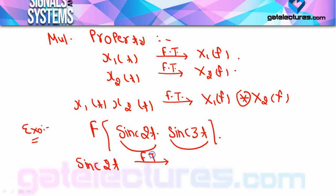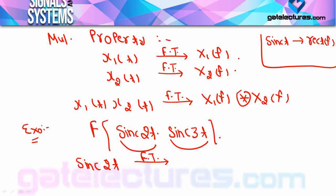sinc(2t) का Fourier transform हमें पता होना चाहिए — हमने last की video में calculate किया हुआ है। sinc(t) का Fourier transform होता है rect(f), तो sinc(2t) का निकालने के लिए scaling property apply करनी होगी। तो यह हो जाएगा (1/2)·rect(f/2)। अब आपको यह सारे standard Fourier transforms अच्छे से याद होने चाहिए और सारी properties mind में होनी चाहिए — रटना नहीं है, सिर्फ लगातार practice करते चलनी है।